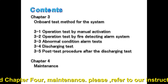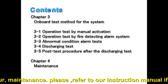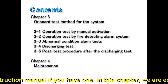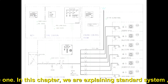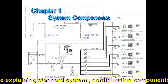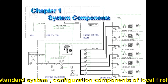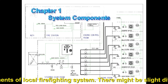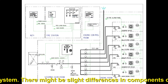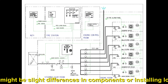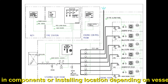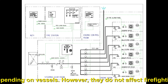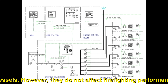Please refer to our instruction manual if you have one. In this chapter, we are explaining standard system configuration components of the local firefighting system. There might be slight differences in components or installing location depending on vessels. However, they do not affect firefighting performance or rules.